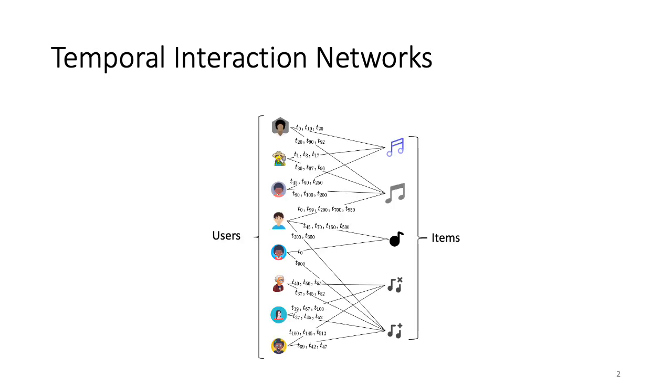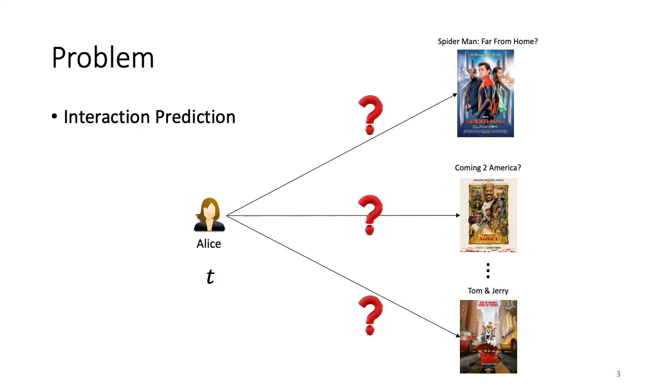In this study, we are interested in temporal interaction networks, which are networks with two types of nodes, users and items, repeatedly interacting over time. The problem we are tackling is that of interaction prediction. Given a user Alice and time t, we seek to predict the most likely item that Alice will interact with at time t. This has applications in many domains, for instance, recommender systems.